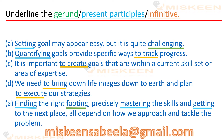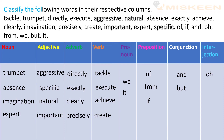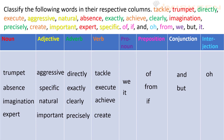Agar aapko jaanna hai ki yeh jawab aise kyun hain — gerund kaise hai, present participle kyun hai — to mujhe Miskeen Sabi Light Gmail.com par likh sakte hain, main aapko detail mein answer dungi, ya phir comment section mein bhi pooch sakte hain. Classify the following words in their respective columns — noun, adjective, adverb, verb, pronoun, preposition, conjunction aur interjection. Yehaan par hum ne in saare words ko unke word class ke hisaab se unke column mein daal diya hai.